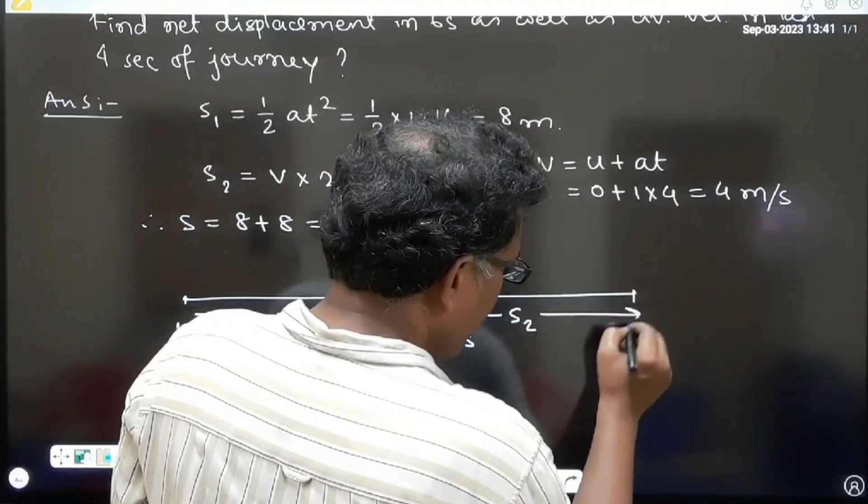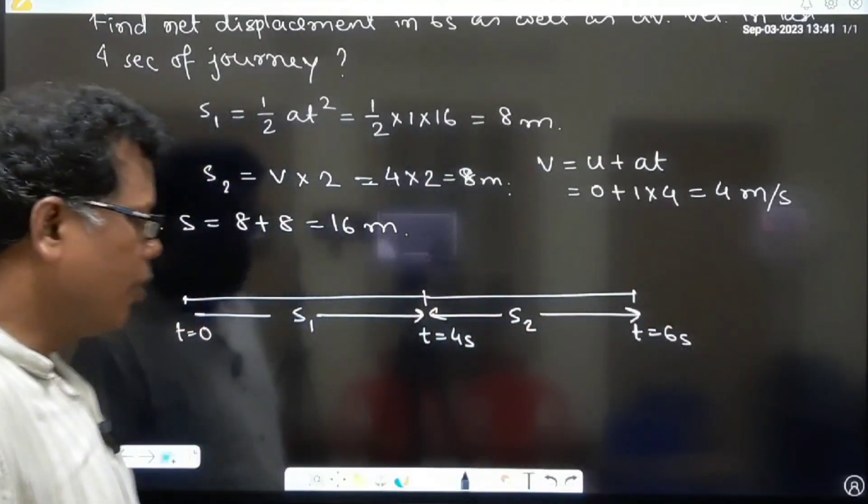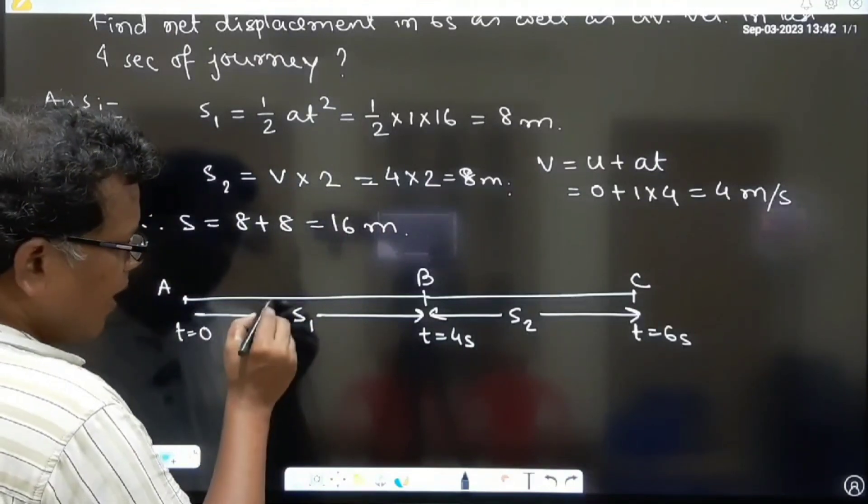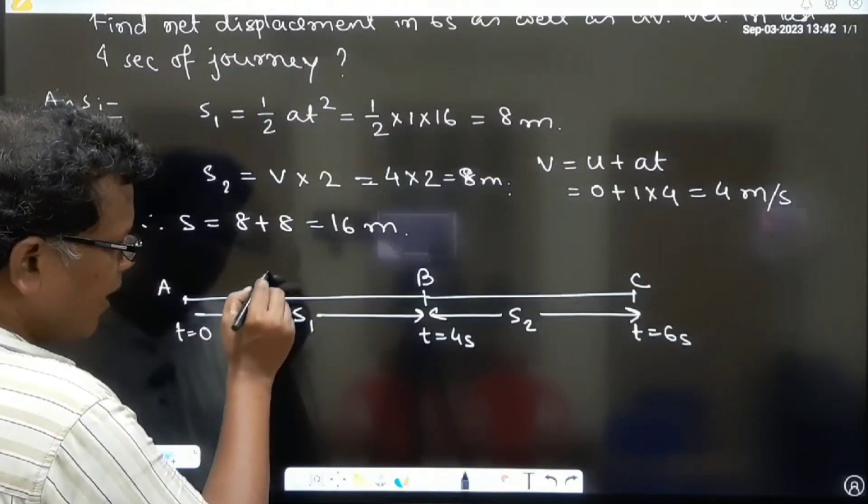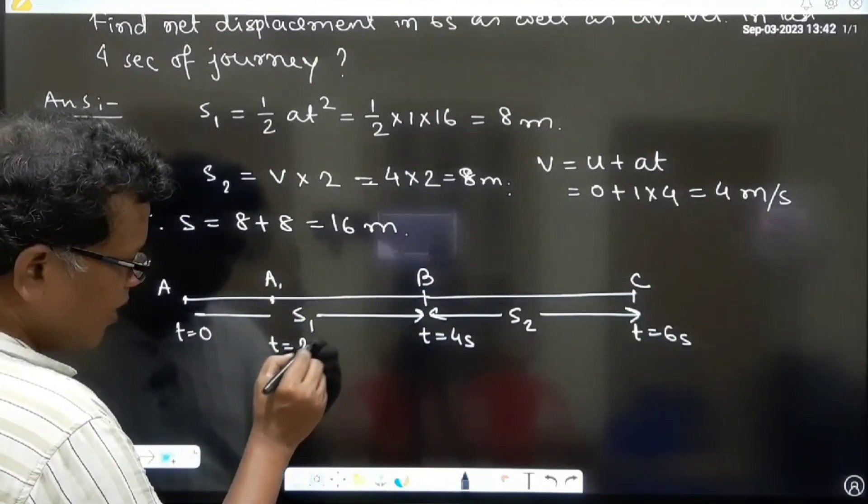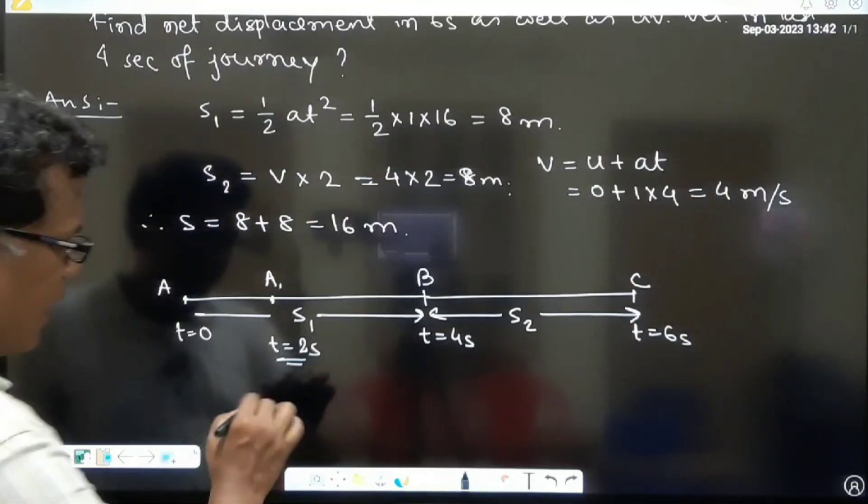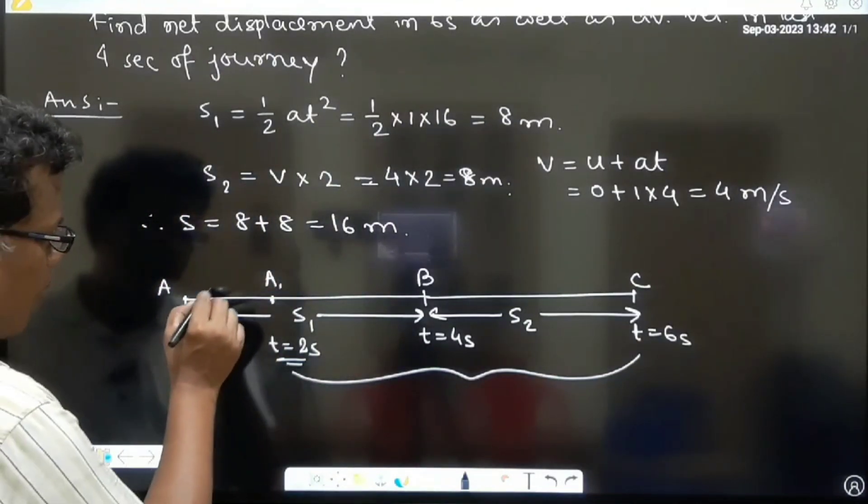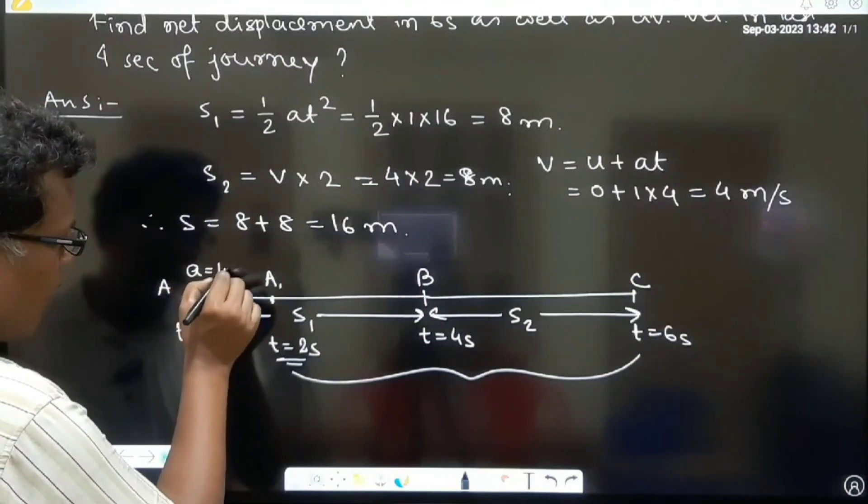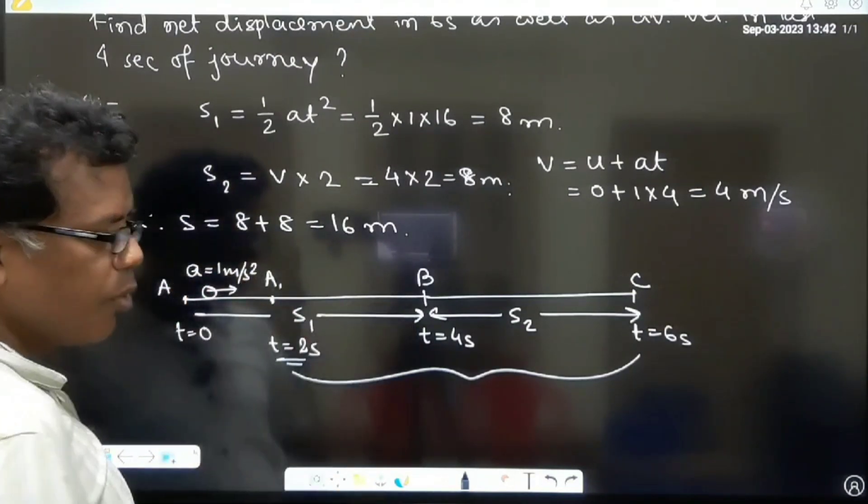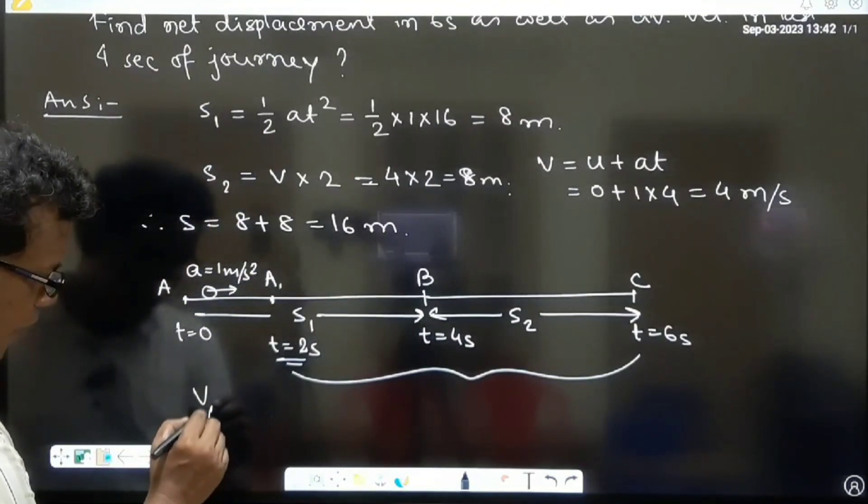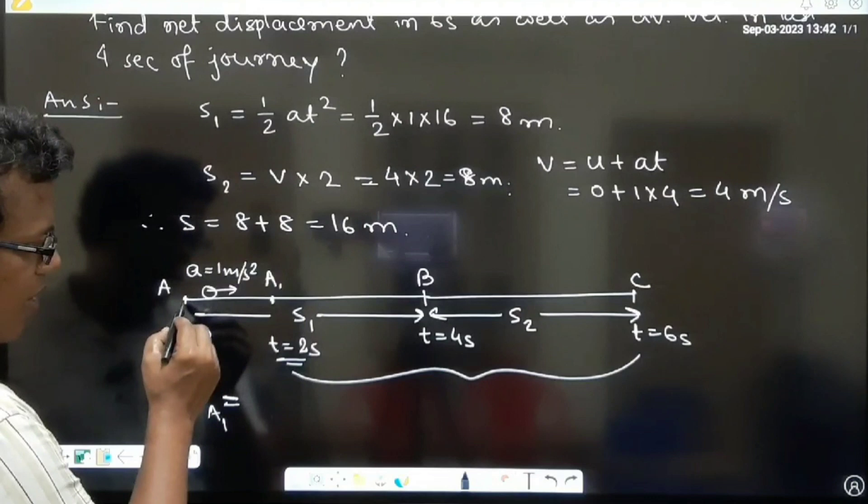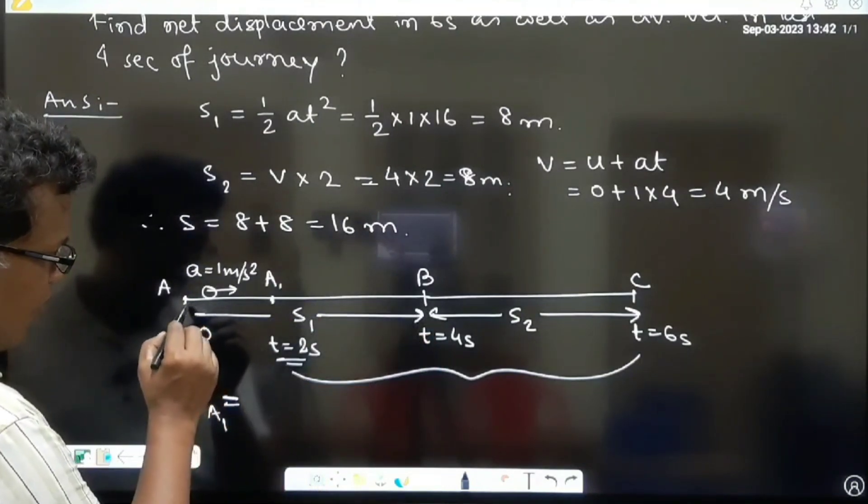This is the position at t equal to 6 second, the intermediate point at position at t equal to 2 second. Last 4 second means it is the journey from that point to the end, with acceleration throughout and the velocity at that point.